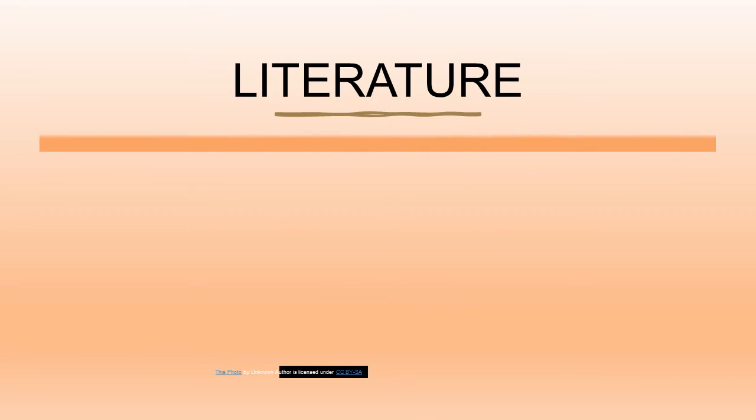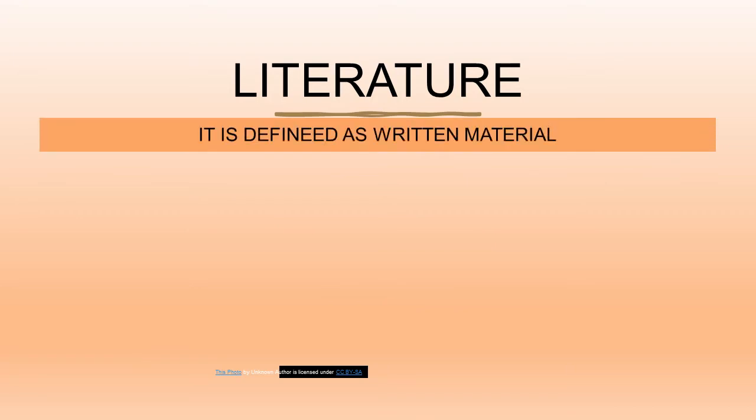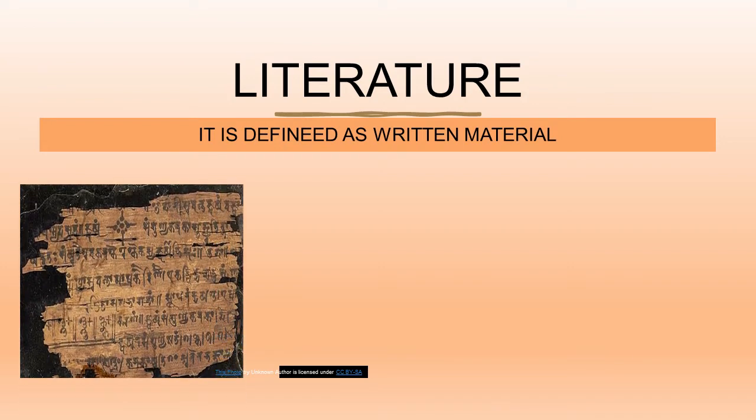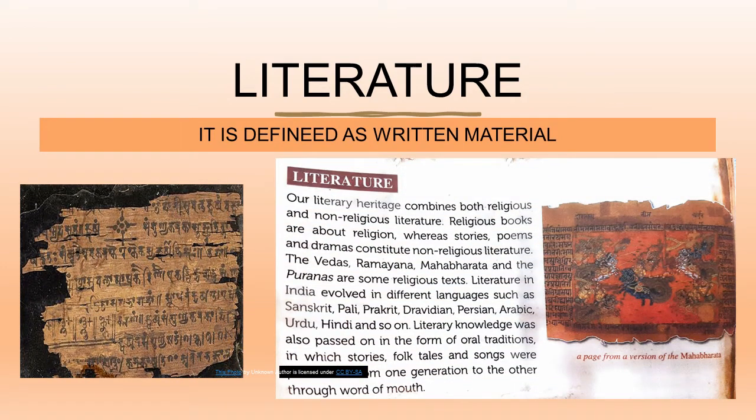Now we will study about literature. What is literature? It is defined as written material. In Indian literature heritage, we have two types: one is religious, and the other is non-religious. Religious literature is related to religion, and non-religious literature relates to other topics like kings or common people, not belonging to religion.